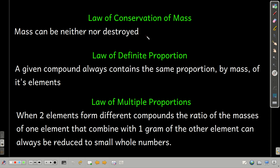The law of conservation of mass says that mass can be neither created nor destroyed. In chemistry, this tells us that the total mass of all the reactants in a chemical reaction must equal the total mass of all the products that are formed. We also use this when balancing chemical equations, because it tells us we have to have the same number of atoms of each element on both sides of the reaction.